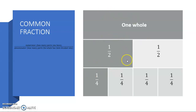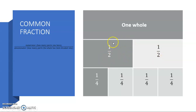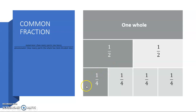So if we look here at this shaded half, it's been divided into two parts, but I actually only have one of them, so it is a half. If we look here at the quarter, how many parts was it divided into? Four parts, but I only have one of them.